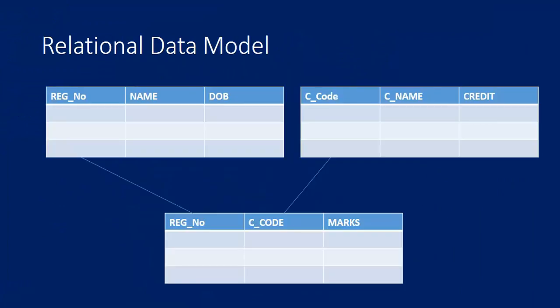In the relational data model, we store data about real-life objects as a relation, and a relation is simply a table. For example, a student table contains registration number, student name, and date of birth — this is the student relation. A course table contains course code, course name, and credits — this should be called the course relation.